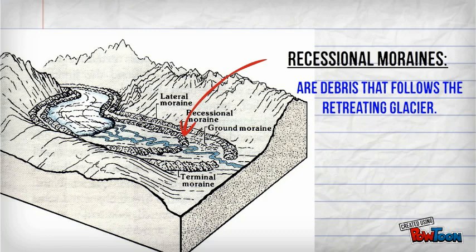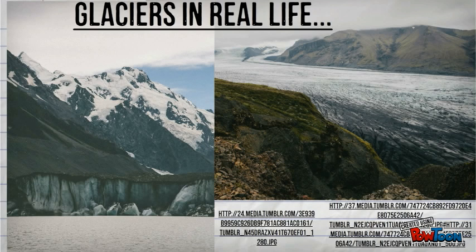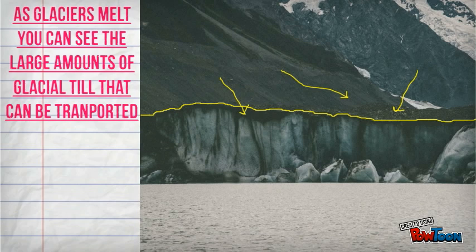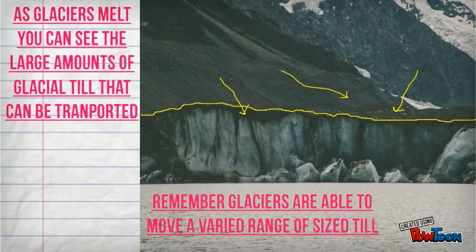The diagrams don't really give glaciers justice, so here are a few photos of real-time glaciers in Iceland today. As you can see, the glacier is covered in debris. Debris is also known as glacial till.